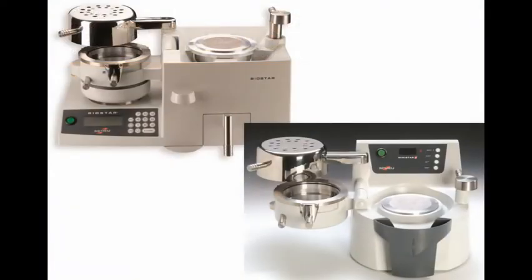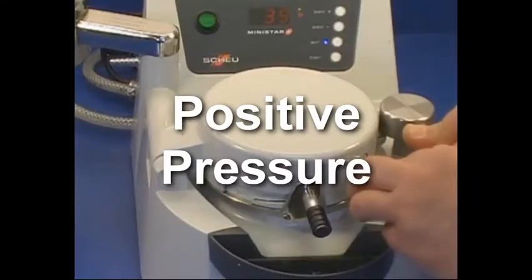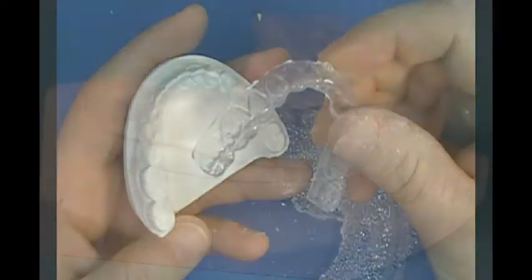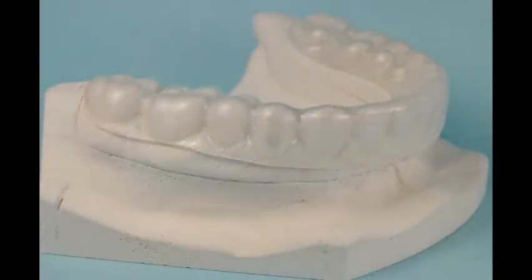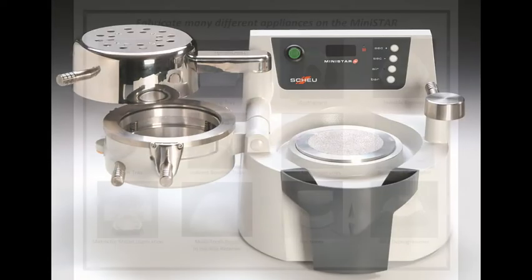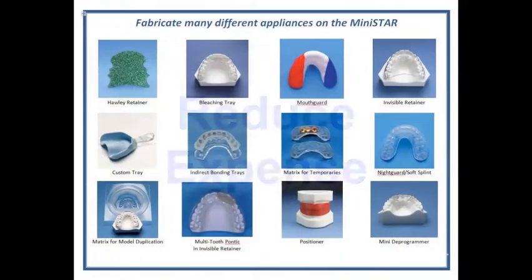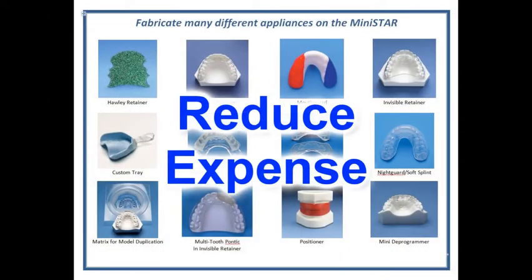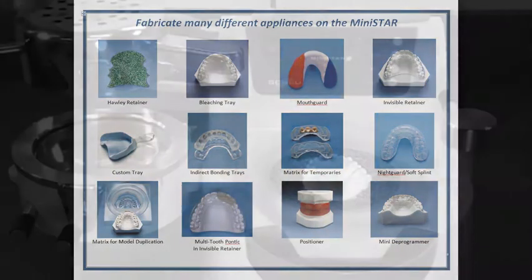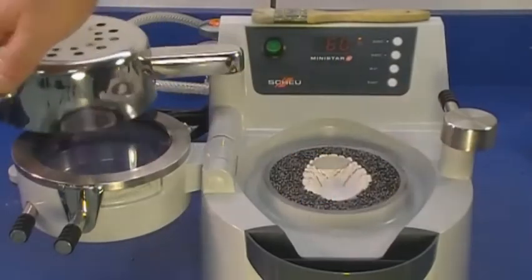The MiniStar and BioStar use positive pressure, which gives you superior adaptation to your model, ensuring the accuracy and fit of your appliance. These machines can significantly reduce your lab expense by increasing the variety of appliances you can do in-house.